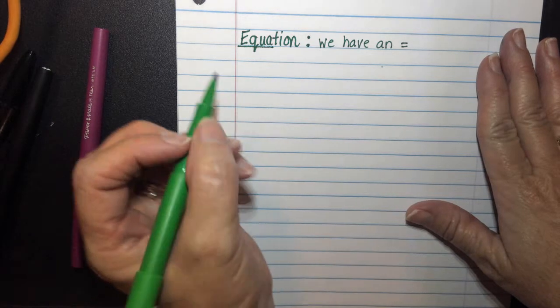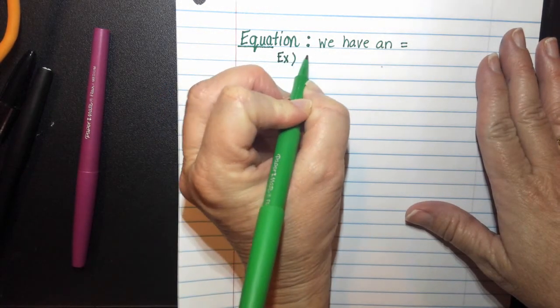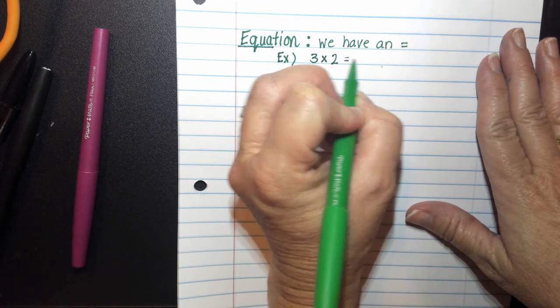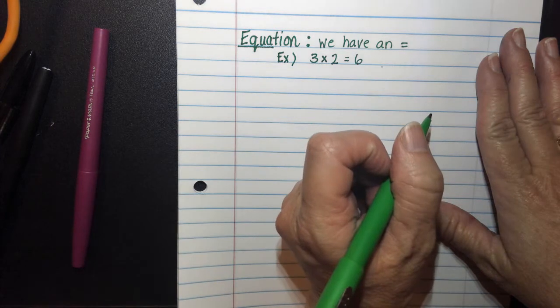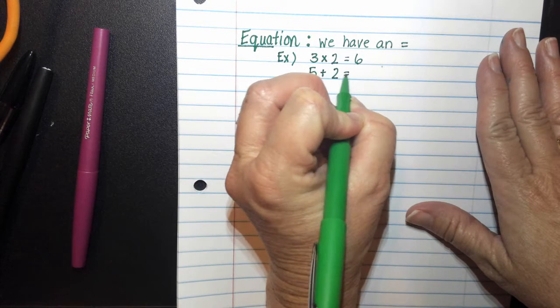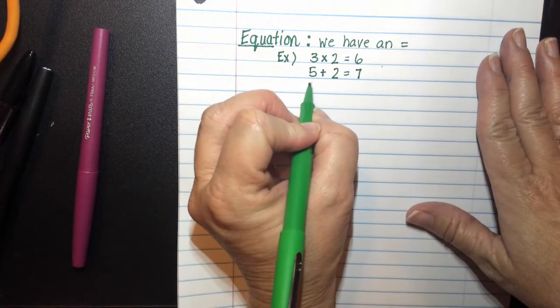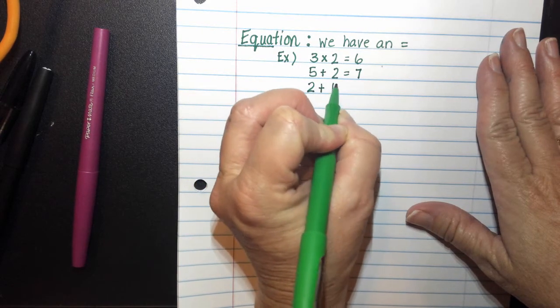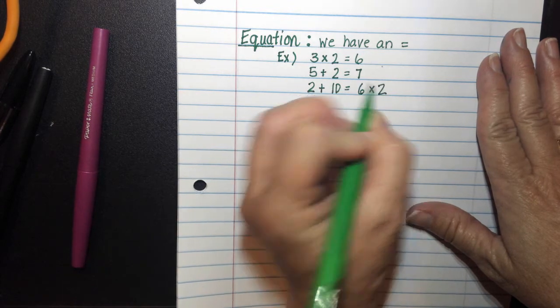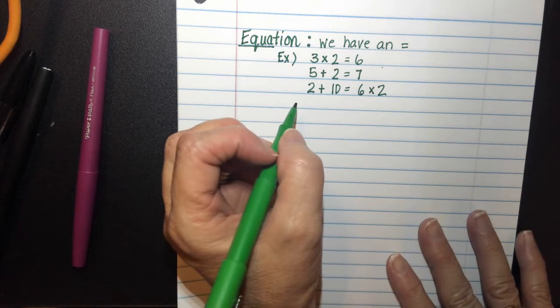And so some examples of that in fifth grade may look like 3 times 2 equals 6, or maybe we have 5 plus 2 equals 7, and we might have 2 plus 10 is equal to 6 times 2. Those would be some examples of an equation.